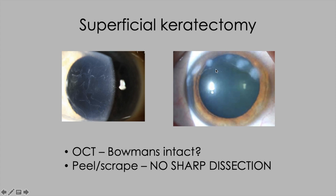On the right, we've got Salzmann's nodular change. These nodules will simply peel away, so have a look at the OCT — you'll often see that Bowman's membrane is intact. The important point here is that you should always attempt blunt dissection and peeling before you consider sharp dissection in any superficial focal corneal lesion like this.